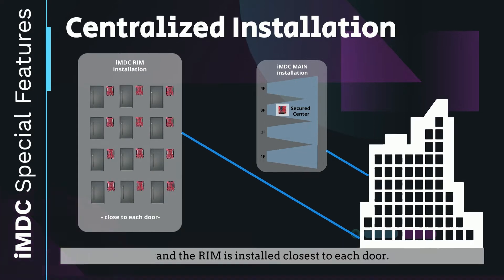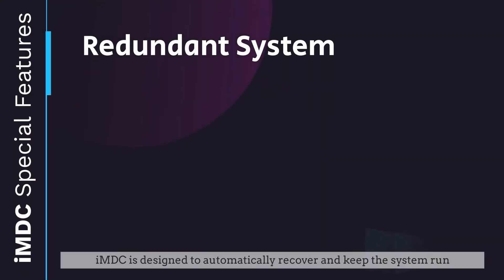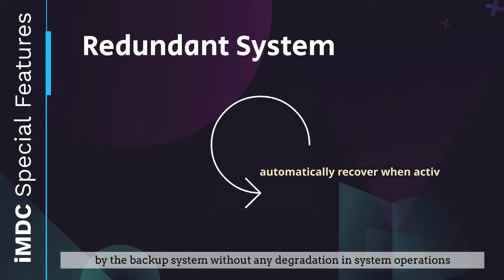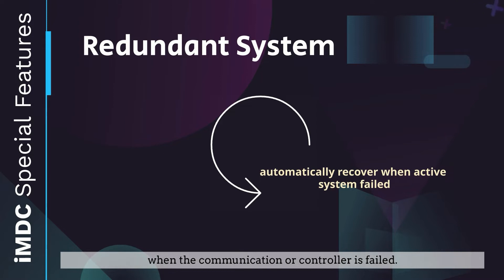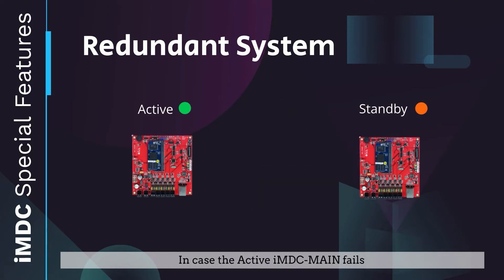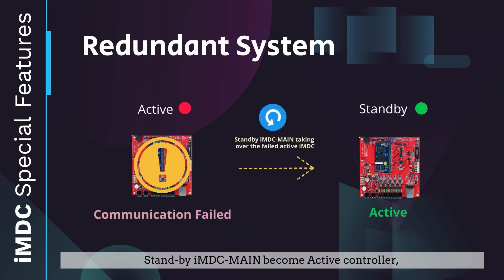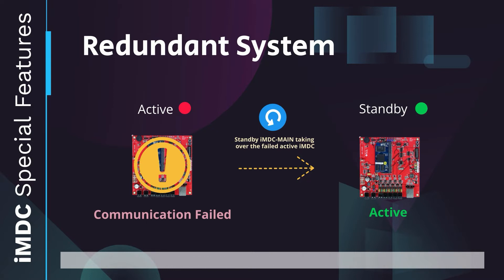2. Redundant System. IMDC is designed to automatically recover and keep the system running via a backup system without any degradation in system operations when communication or a controller fails. In case the active IMDC main fails, the standby IMDC main becomes the active controller, taking over the operation of the failed IMDC main. This redundant system ensures the system operates under any circumstances.